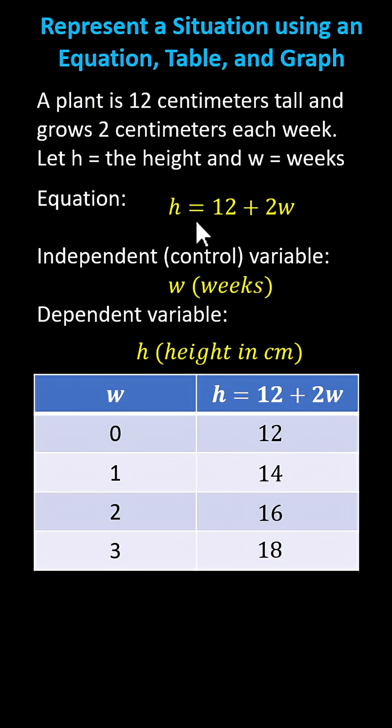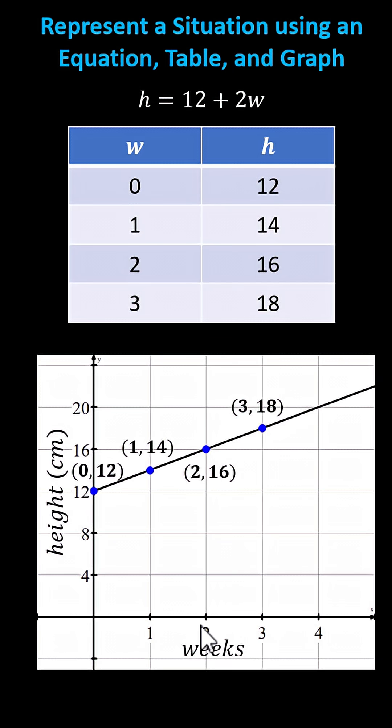And now let's graph the equation h equals 12 plus 2w using the ordered pairs from the table. I've already set this up below. The first step was to scale the axes appropriately.